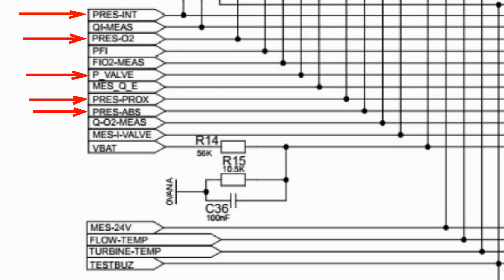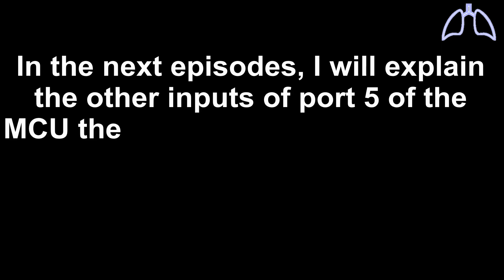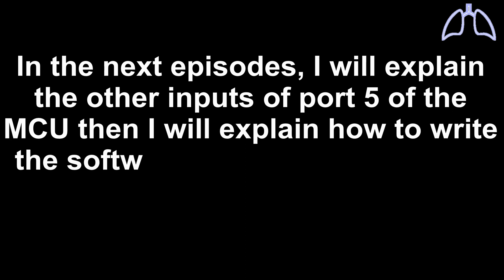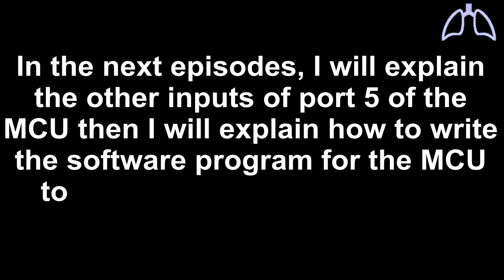5 of the 16 analog inputs of port 5 are outputs of the recently explained pressure sensing circuits. In the next episodes, I will explain the other inputs of port 5 of the microcontroller, then I will explain how to write the software program for the microcontroller to read the port 5 analog input signals.